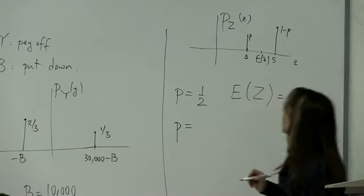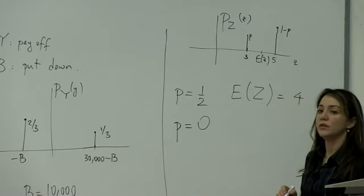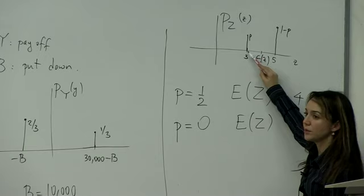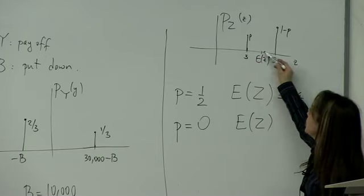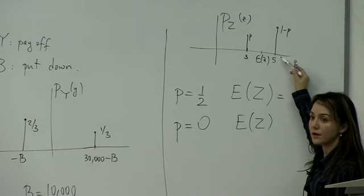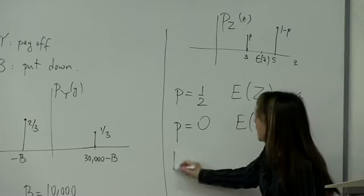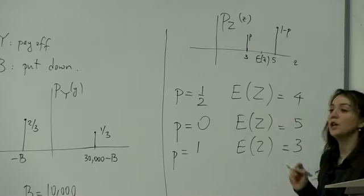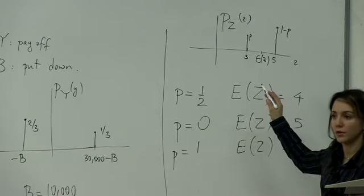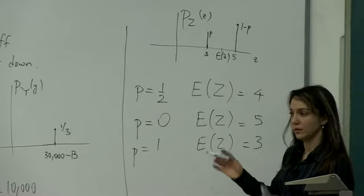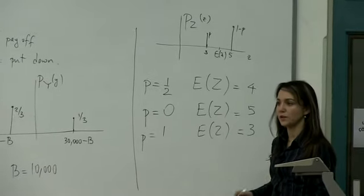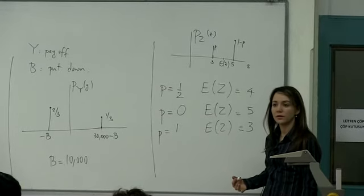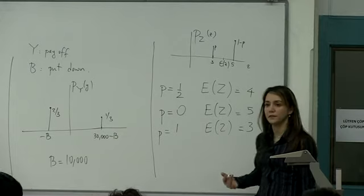If p is made zero, then since this value becomes impossible, expectation moves all the way to five. If p is made one, the expectation moves all the way to three. So in general, the expectation of a discrete random variable is somewhere within the support of that random variable. In fact, it is exactly equal to the center of gravity of the PMF.